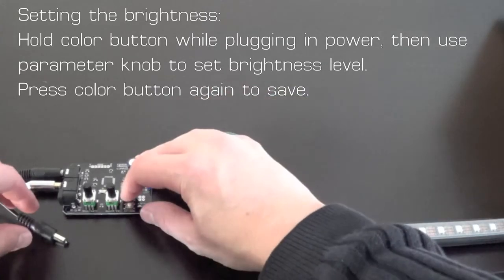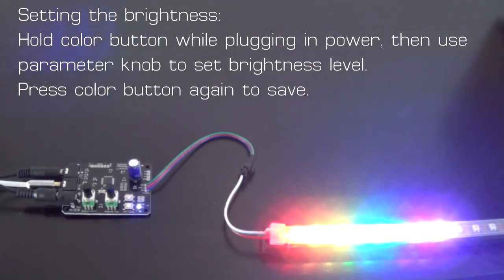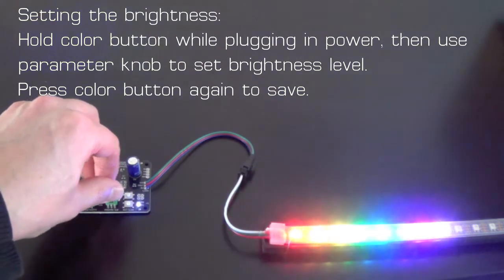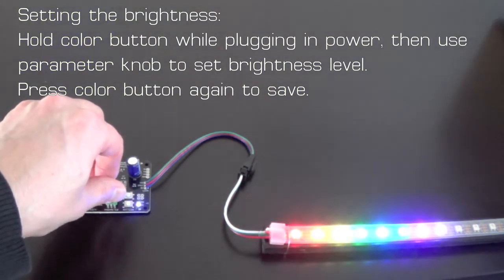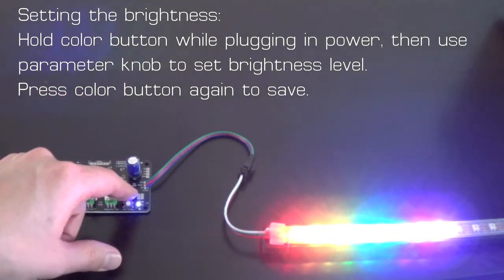To adjust the LED brightness, hold down the color button while plugging in the power. Then you can use the parameter button to dim or brighten the LED colors that are displayed. When you've set the brightness to what you want, press the color button again.